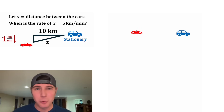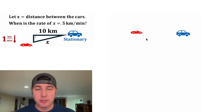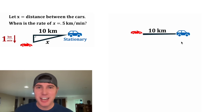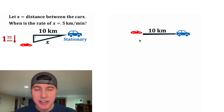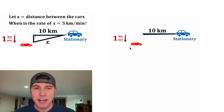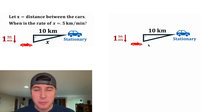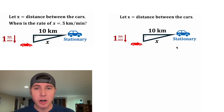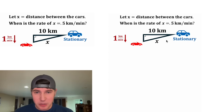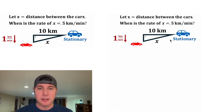Hey guys, I want to share with you a calculus word problem. If we have two cars — a red sports car convertible and a blue hatchback — and they're 10 kilometers apart, and the red convertible sports car heads directly south at a constant rate of one kilometer per minute, let's measure the distance between the two cars and call that x. When is the distance between the cars growing at a rate of half a kilometer per minute?